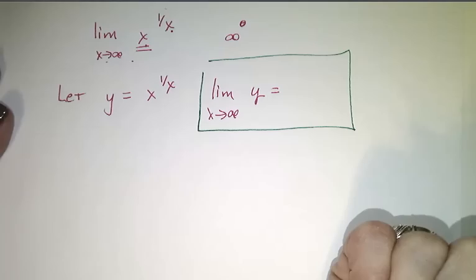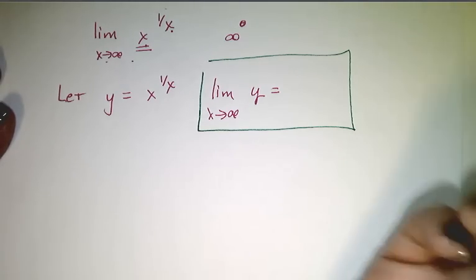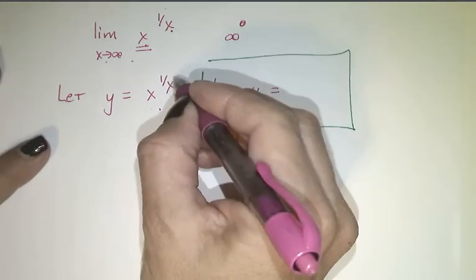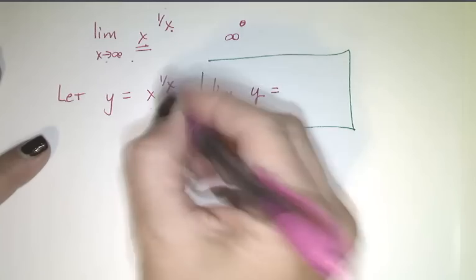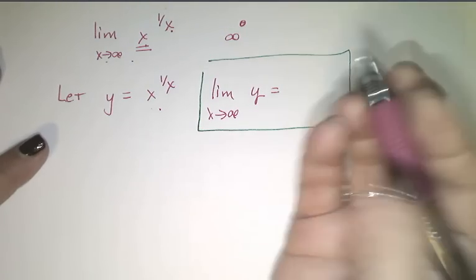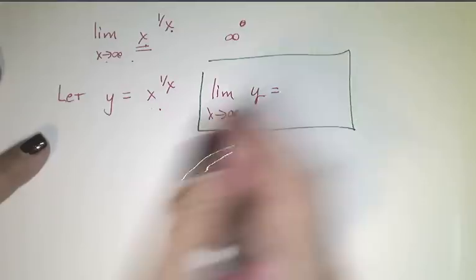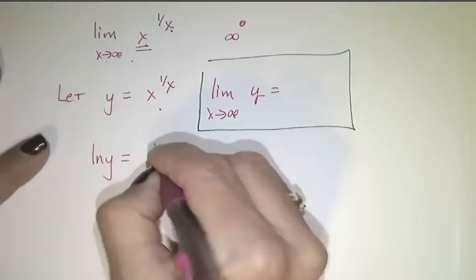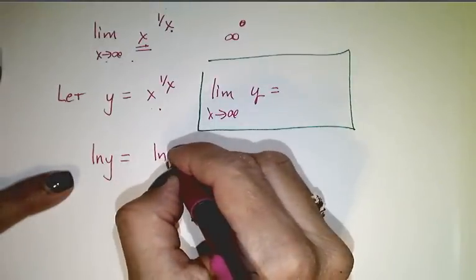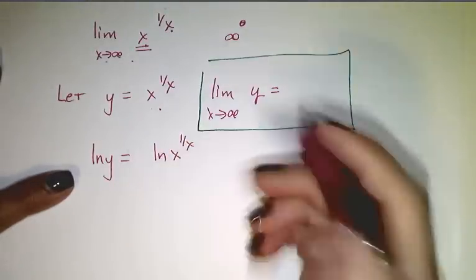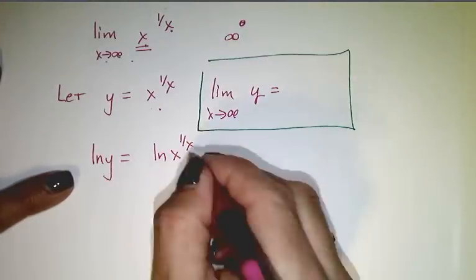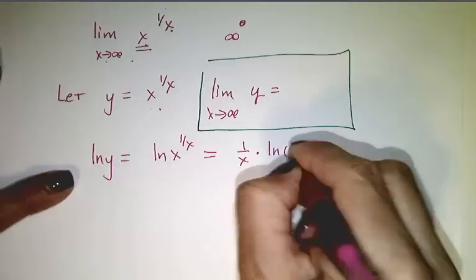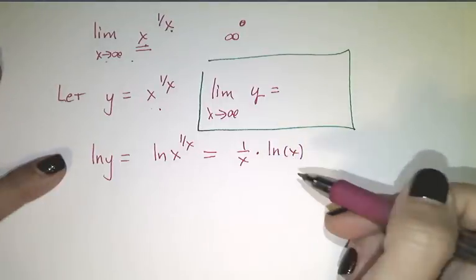As any good mathematician should do, I'm going to see what I can do to reduce this to a case I already know. That's going to involve getting this power down, which should make you think of logs. So I'm going to take the natural log of both sides: the natural log of y equals the natural log of x to the 1 over x. I'll pull the exponent down: 1 over x times the natural log of x. Now I have a product.